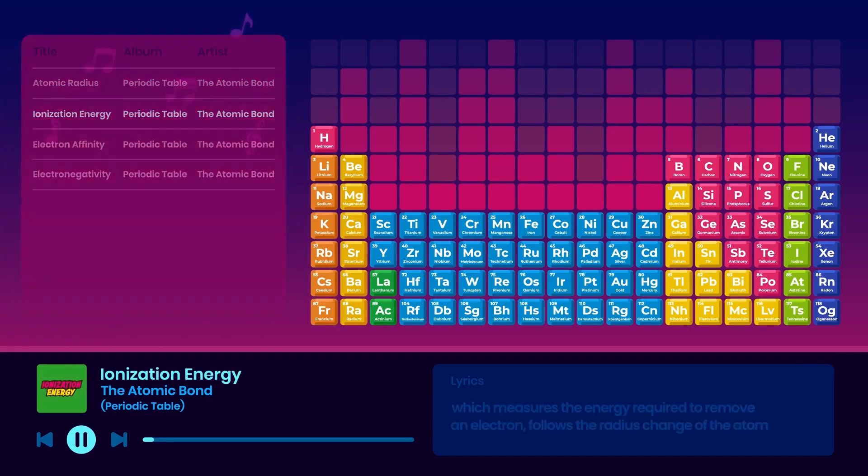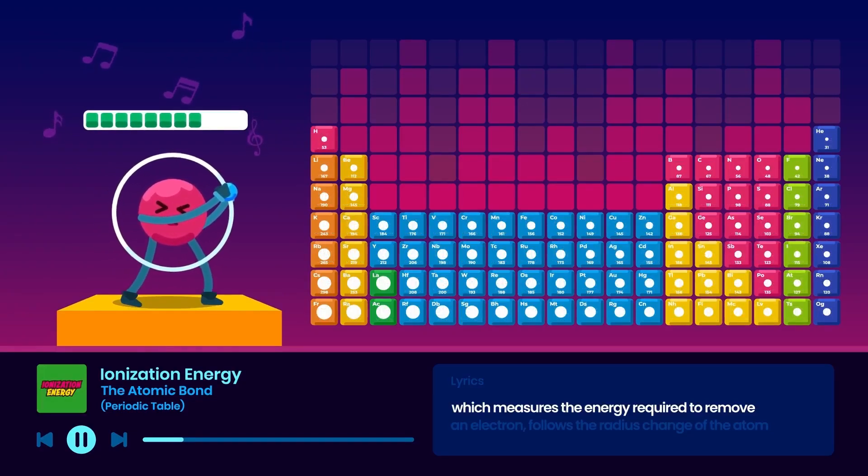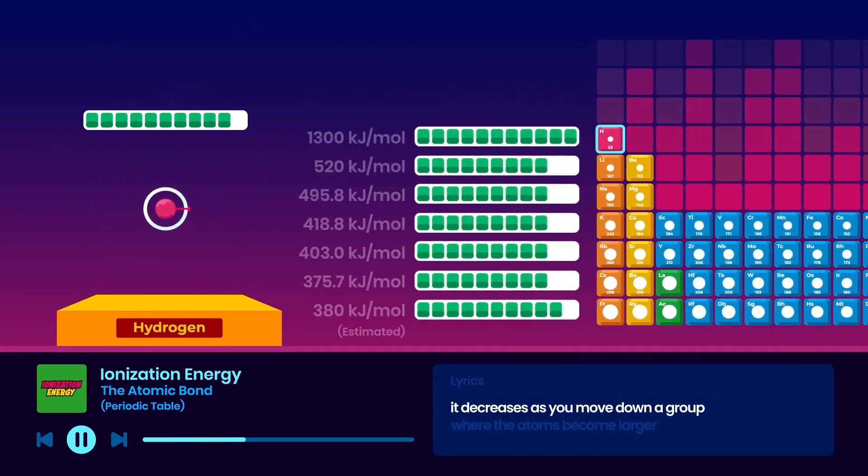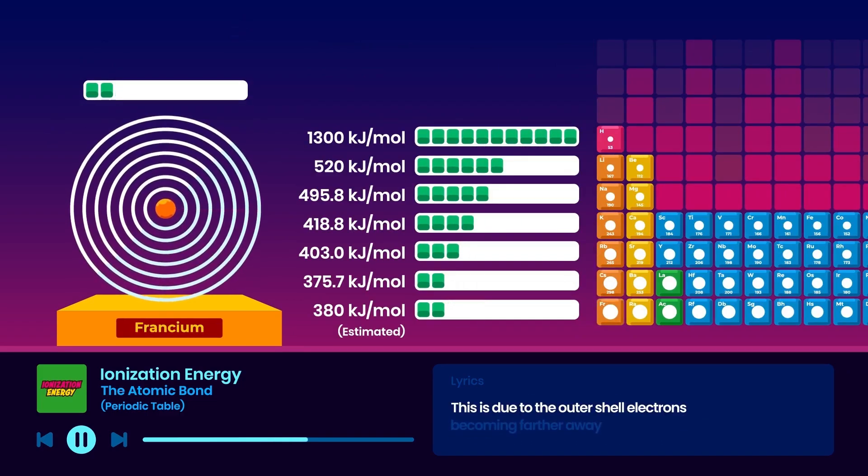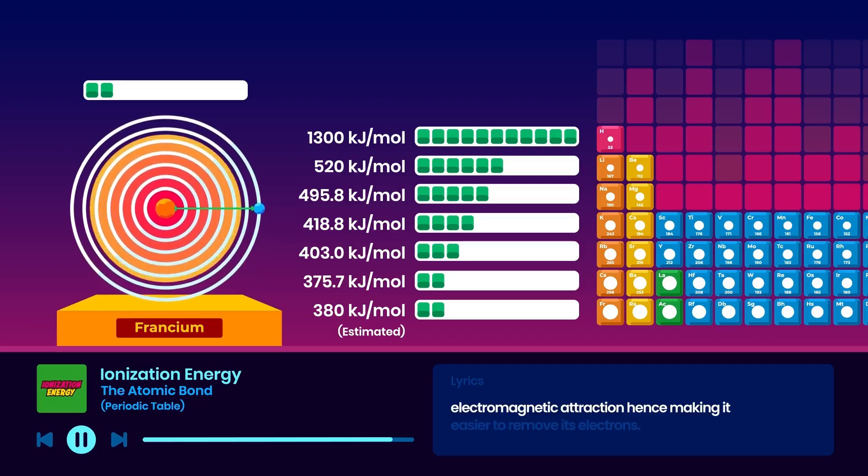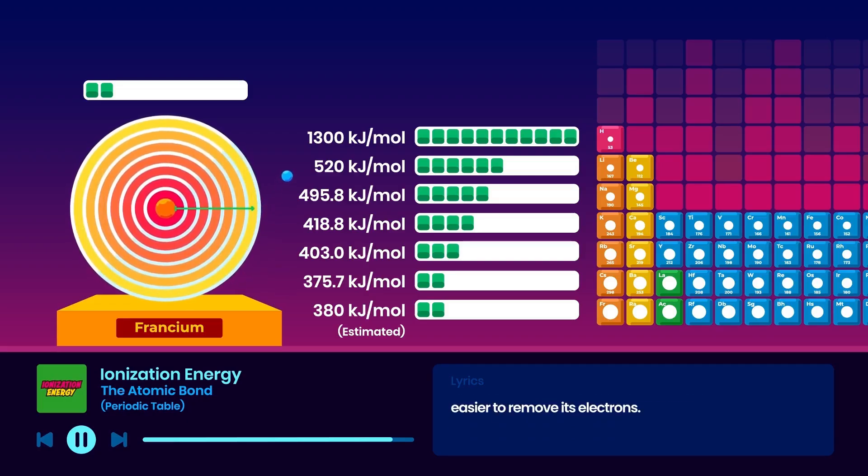As a result, ionization energy, which measures the energy required to remove an electron, follows the radius change of the atom. It decreases as you move down a group where the atoms become larger. This is due to the outer shell electrons becoming further away from the positively charged protons of the nucleus, which make larger atoms exhibit a weaker electromagnetic attraction, hence making it easier to remove its electrons.